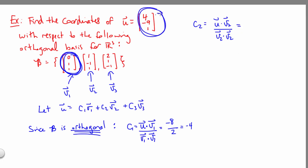The dot product of u with v2 gives us 14, and v2 dot v2 gives us 3. So that second coefficient is 14 thirds.